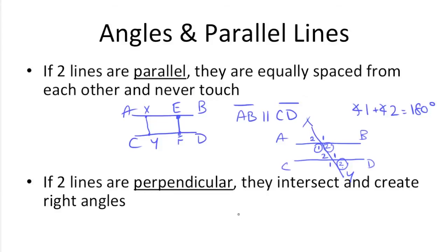Now, if you have two lines that are perpendicular, they intersect and create right angles. That just means that you have A, B, C, D. A, C is going to be perpendicular to B, D. This is the symbol for perpendicular, which means that you create two right angles here.